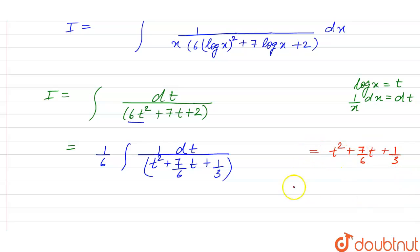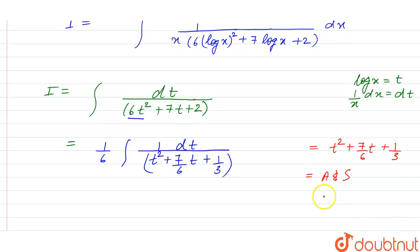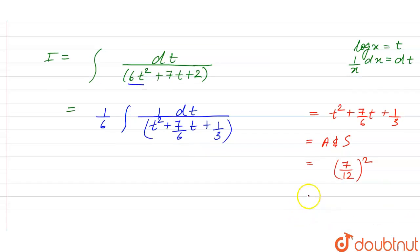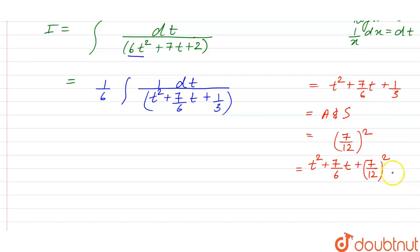In this type of question we try to make t squared plus 7 by 6 t plus 1 by 3 a complete square. To do so, we add and subtract 7 by 12 whole square, so we have t plus 7 by 12 whole square, plus 1 by 3 minus 49 upon 144.